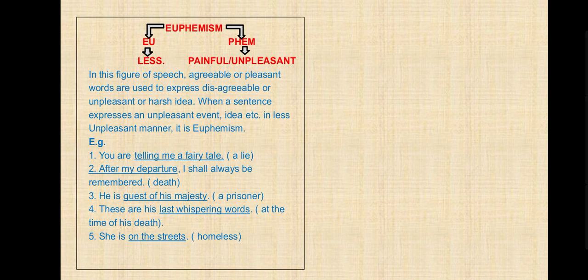Euphemism — 'eu' means less, 'pheme' means painful or unpleasant. In this figure of speech, agreeable or pleasant words are used to express disagreeable, unpleasant, or harsh ideas. When a sentence expresses an unpleasant event in a less unpleasant manner, it is euphemism. Examples: 'You are telling me a fairy tale' — meaning telling a lie. 'After my departure I shall always be remembered' — meaning after the person's death. 'He is the guest of his majesty' — meaning he is a prisoner. 'These are his last whispering words' — at the time of the person's death. 'She is on the streets' — meaning she is homeless.